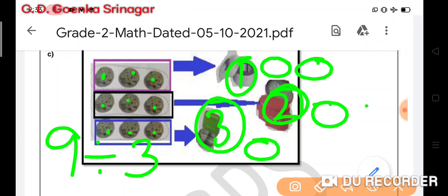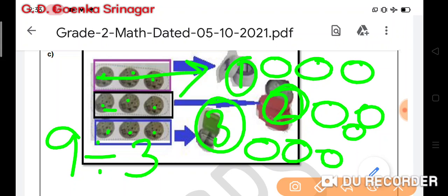Then 1 more, 1 more, and 1 more. I am still left with 3, so 1 more, 1 more, and 1 more. So each lunch box has 3 chapatis in them. This is equal distribution.